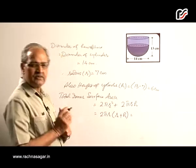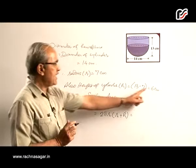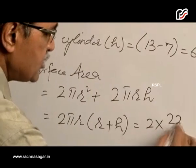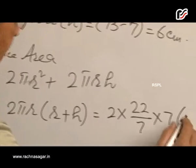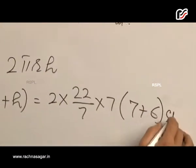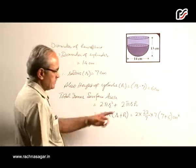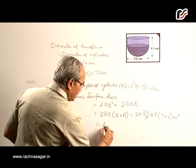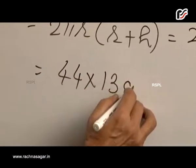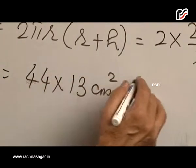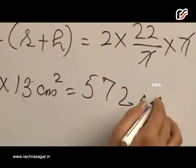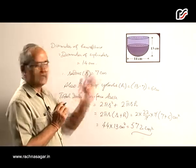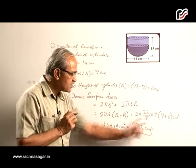Now we substitute the values: r is 7 centimeters and h is 6 centimeters. So it is 2 × (22/7) × 7 × (7 + 6). The 7s cancel out, giving 44 × 13, which equals 572 square centimeters. Therefore, the total inner surface area is 572 square centimeters.